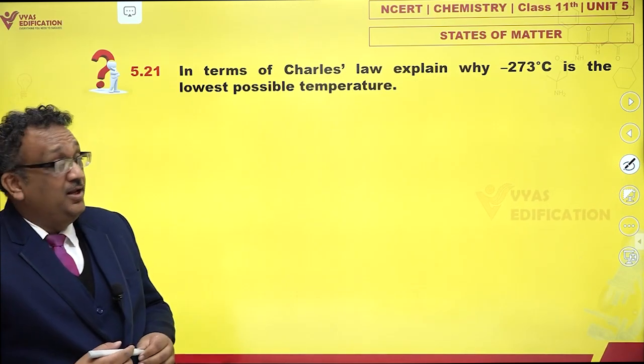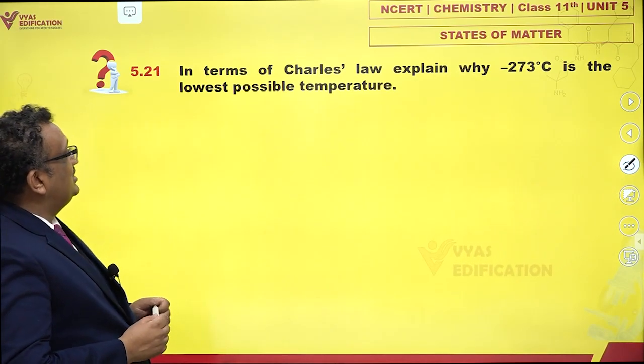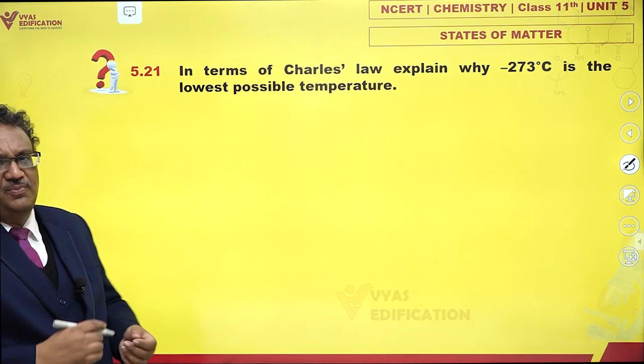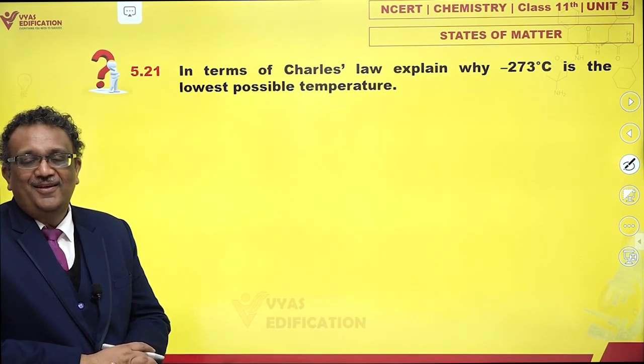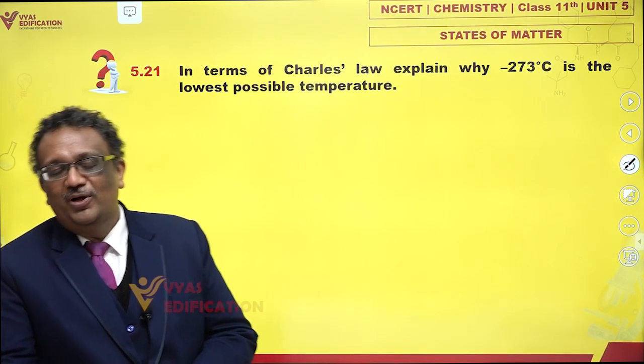In terms of Charles law, explain why minus 273 degrees Celsius is the lowest possible temperature. Now what is Charles law? What did Mr. Charles do?